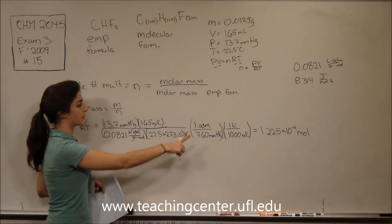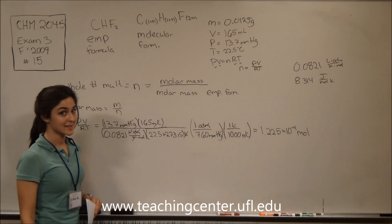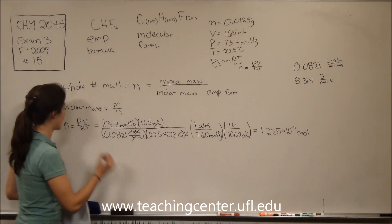So plugging this into our calculator, we get 1.225 times 10 to the negative 4 moles. So now we have a total number of moles in our sample here, and we have the mass, so we can figure out the molar mass of our compound.